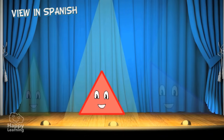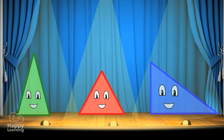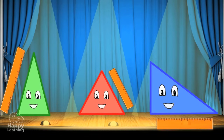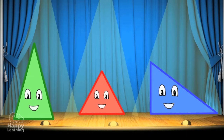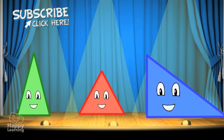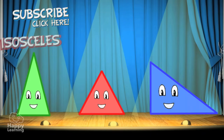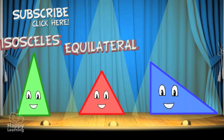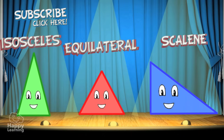There are different kinds of triangles and we classify them by the length of their sides. Using this classification we get three types of triangles: isosceles, equilateral, and scalene.